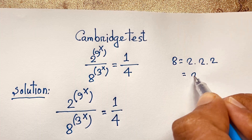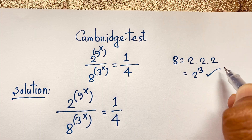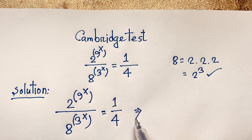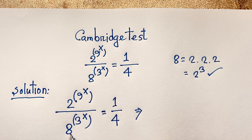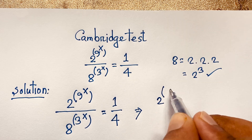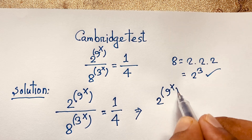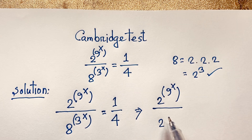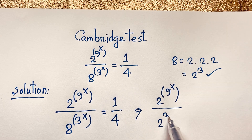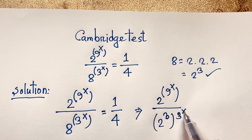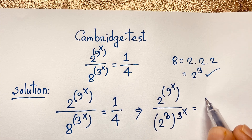Now, 8 equals 2 times 2 times 2, so it will be 2 to the power 3. Since 8 equals 2^3, I evaluate this expression: the base becomes 2. So we have 2 to the power 9x over 2 to the power 3, bracket power 3x, and this equals 1 over 4.